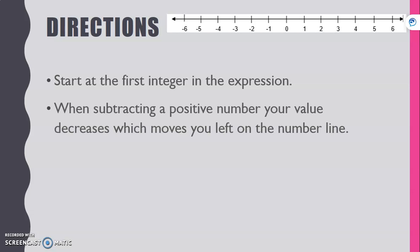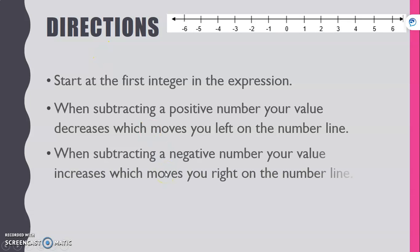When subtracting a positive number, your value decreases, which moves you to the left on the number line. That's what we normally do with subtraction — we start at a number and go backwards, moving to the left, going more towards the negatives.